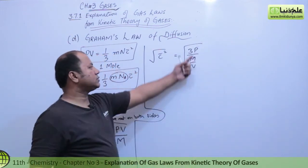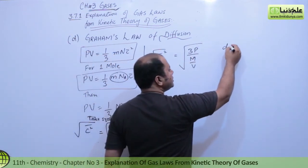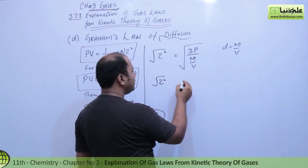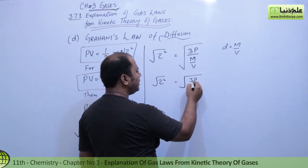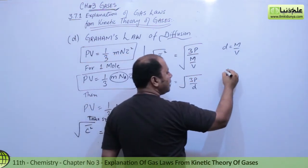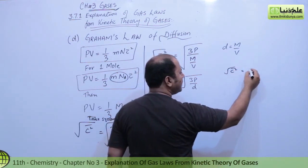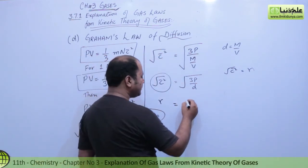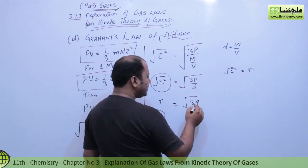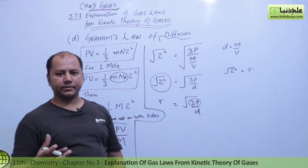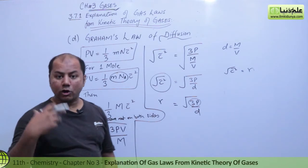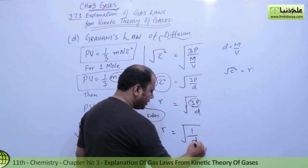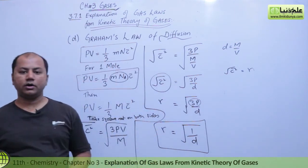We multiplied M into the numerator because we know that density equals mass over volume. So M/V can be replaced by density d. Therefore, C_rms = √(3P/d). This root mean square velocity is directly proportional to the rate of diffusion. Keeping pressure constant, 3P becomes a constant, so rate ∝ 1/√d. This is Graham's Law of Diffusion.